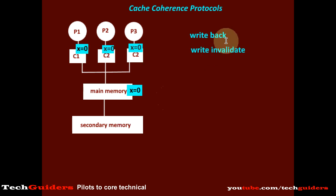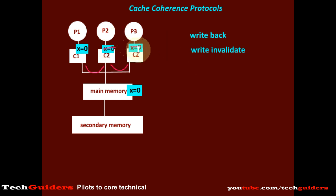In write-back with write-invalidate, for every write we never update the main memory, but we send the invalid signal to all other local caches. The local caches having the shared location will mark it as invalid and never use it. If there are no intervening reads by any other processor, there is no need to send the invalid signals again for further writes. Finally, when this block is replaced, the value is updated to the main memory.